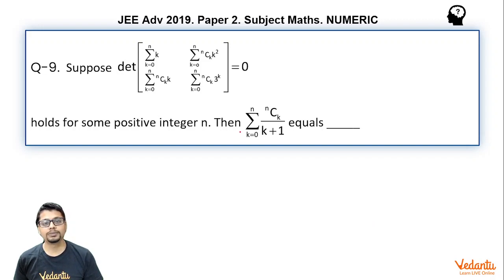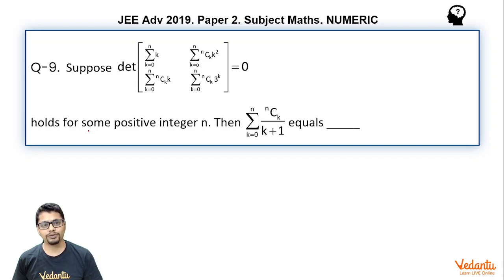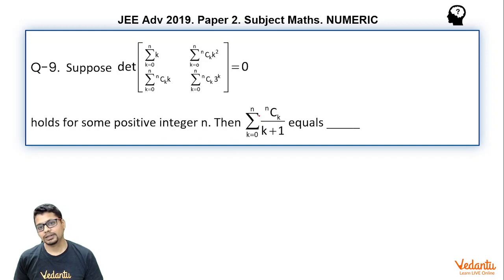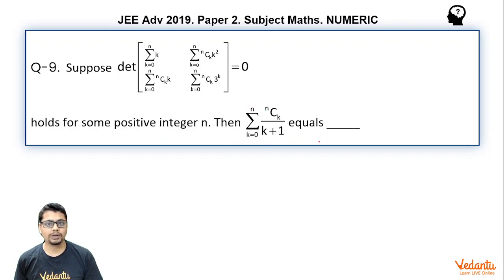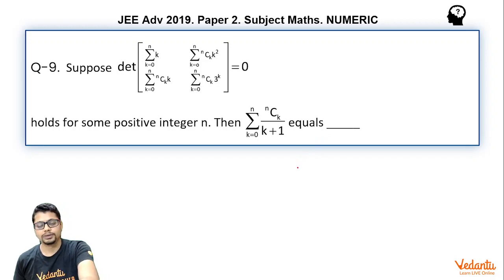Suppose the determinant of a matrix which has some summations as its elements is equal to 0, and this holds for some positive integer n. Then sigma k equal to 0 to n of nCk by (k+1) equals what. It is a numeric type question, let's solve it.